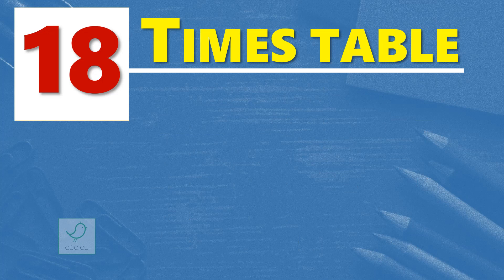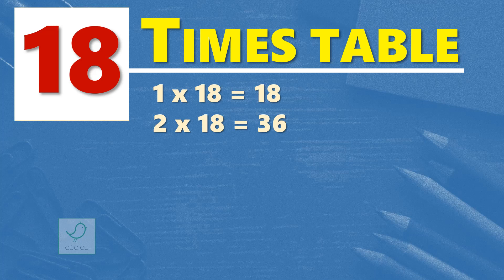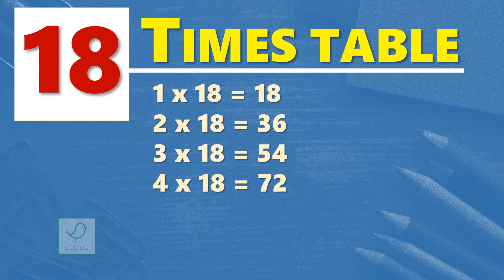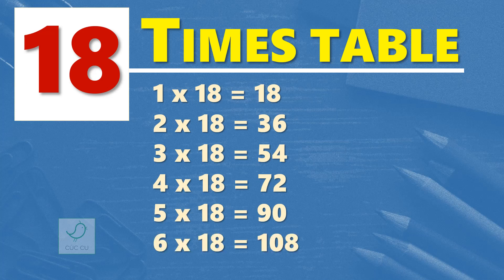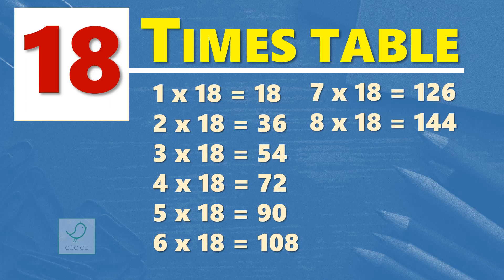Eighteen times table. One times 18 is 18. Two times 18 are 36. Three times 18 are 54. Four times 18 are 72. Five times 18 are 90. Six times 18 are 108. Seven times 18 are 126. Eight times 18 are 144.